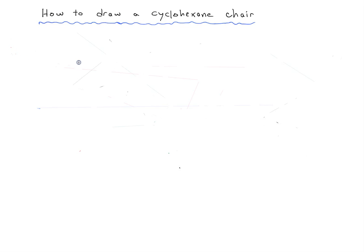Today let's talk about how to draw a cyclohexane chair. One of the easiest ways to draw a cyclohexane chair that I've found is something I call the parallelogram method. When you go into an organic chemistry course for the first time you've never drawn a cyclohexane chair before, but you've probably drawn a parallelogram. And a parallelogram is really at the core of a cyclohexane chair. If you look at these four little dots that I circle here, each of these four dots is going to be one of the carbons that's going to be a part of our cyclohexane chair structure.